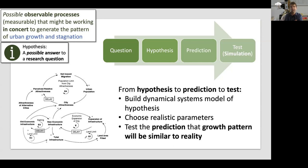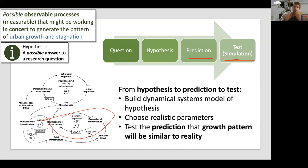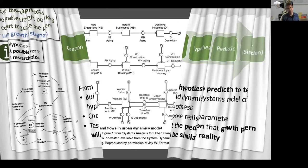I'd like to build a simulation model to test that hypothesis. The generation of predictions comes out of the simulation model. When I run the simulation model, I can compare it to data. If they match, that gives me an idea that infrastructure really is a major explanatory variable for city growth. But if I get totally different dynamics, maybe I'm missing something and it's not all about infrastructure.